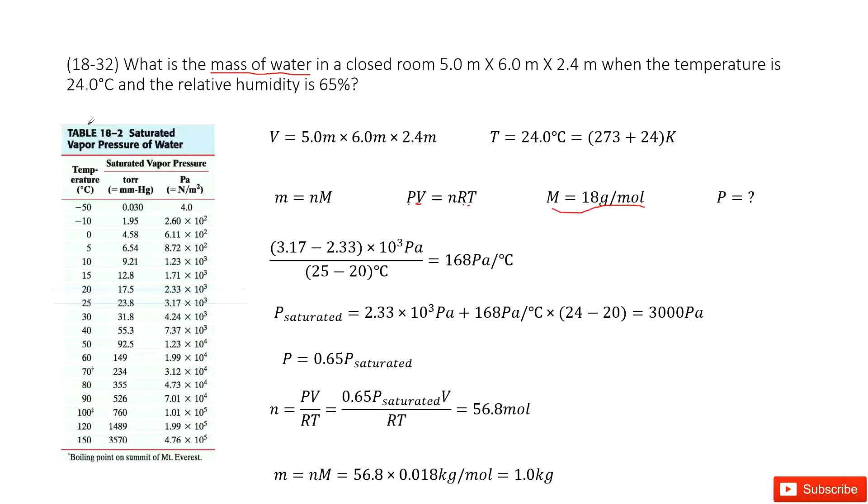But then we can check the temperature 24. Do we have that? No. We just know the 24 centigrade is in the range 20 to 25.